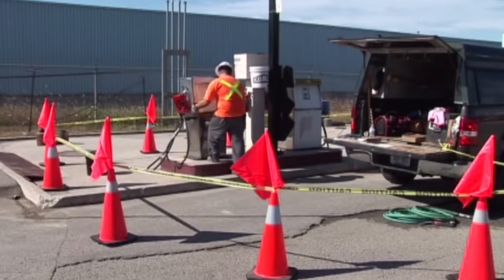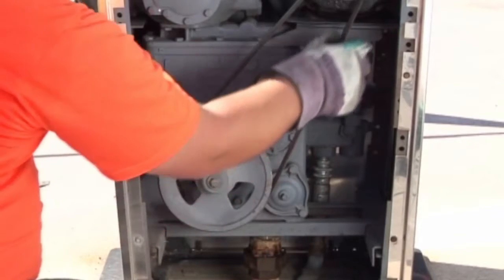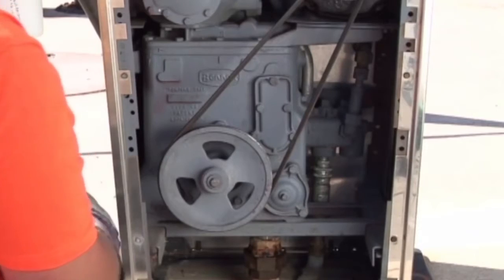Once the cover panel is removed, observe whether a fuel pump, motor, and belt are located inside the cabinet. If the fuel pump, motor, and belt are contained inside the cabinet,